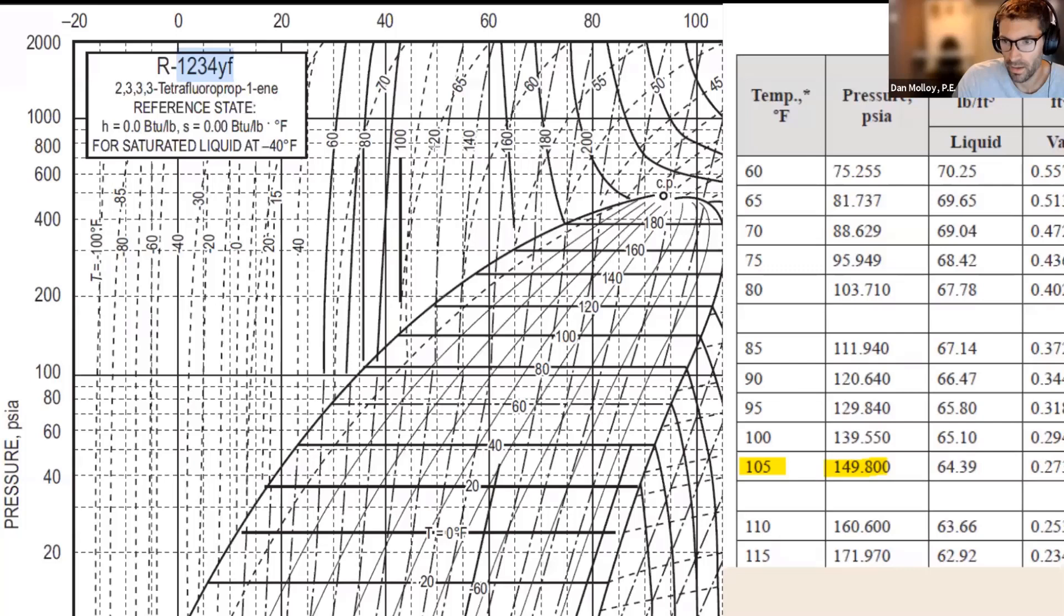So if you are doing 20 degrees superheat, let's just say for example you're starting from, let's say, the temperature of the evaporator is 40 degrees, then you're going to add 20 degrees of superheat. You're going to go horizontally until you hit the 60 degree temperature line.